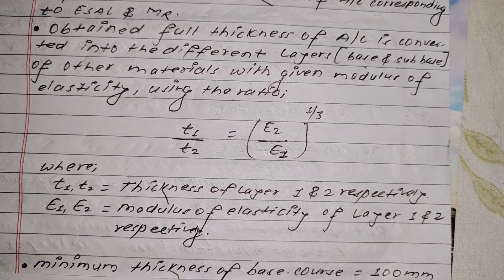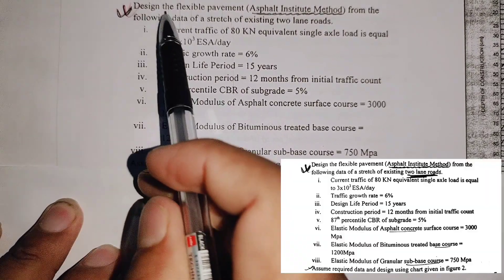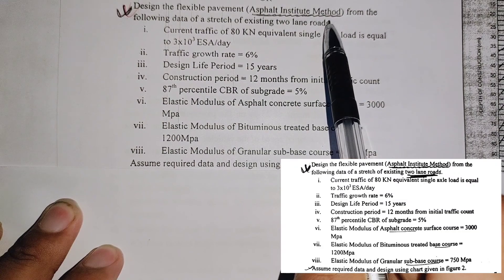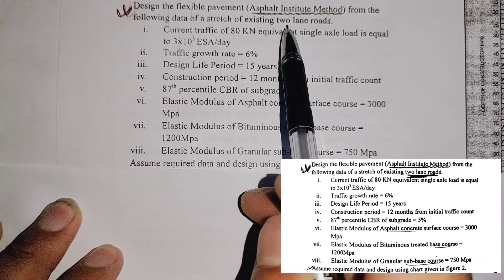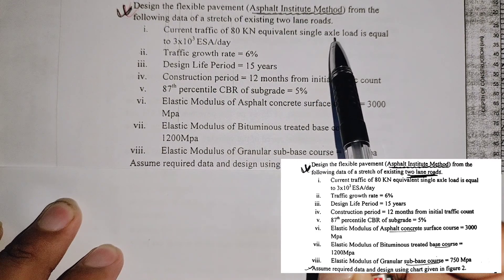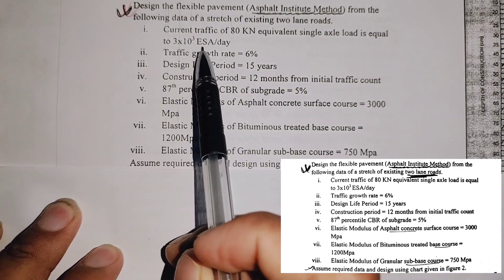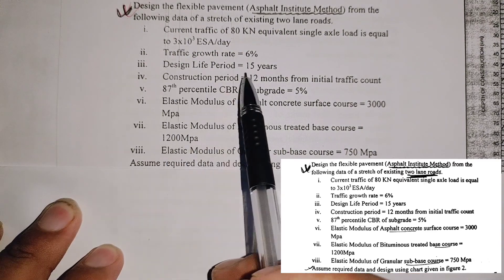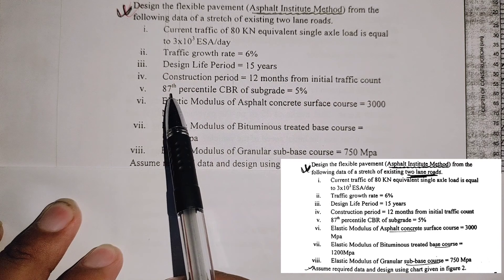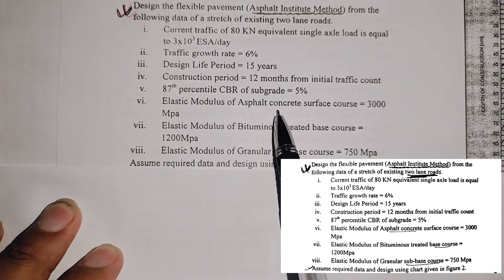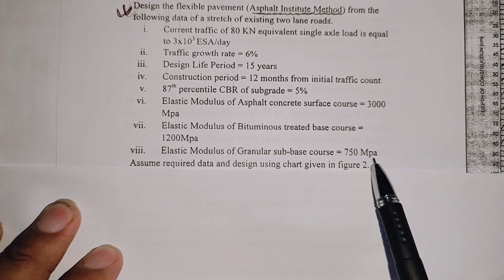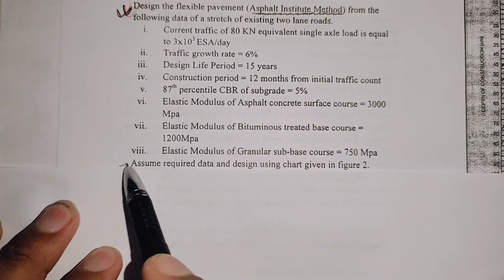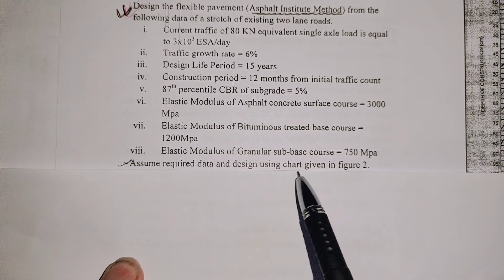Now I will go to an old question. The question says: design the flexible pavement by the Asphalt Institute method from the following data of a stretch of existing two-lane roads. Current traffic of 80 kilonewton equivalent single axle load is equal to 3 × 10³ ESAL per day. Traffic growth is 6%, design life period is 15 years, construction period is 2 months. 87th percentile CBR of subgrade is 5%.